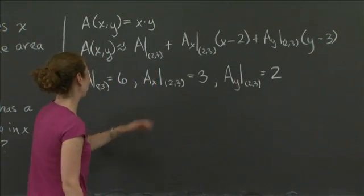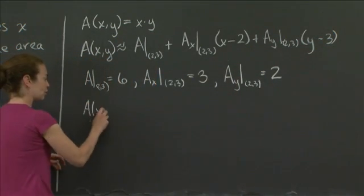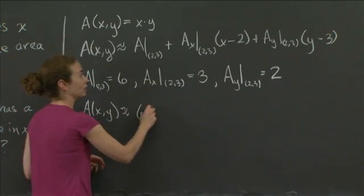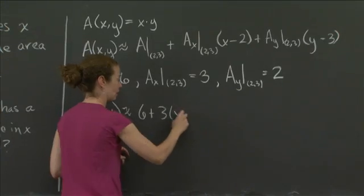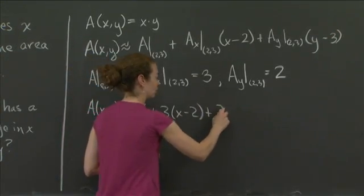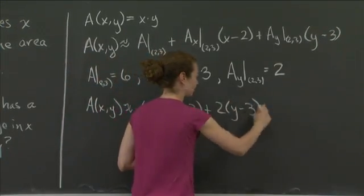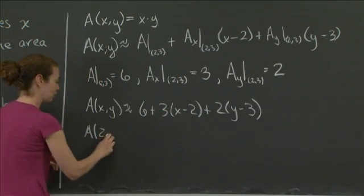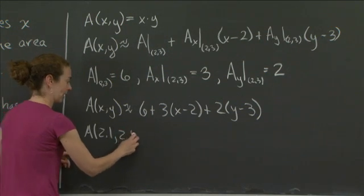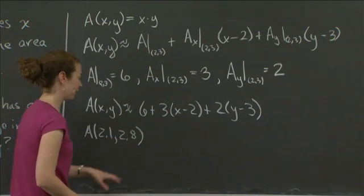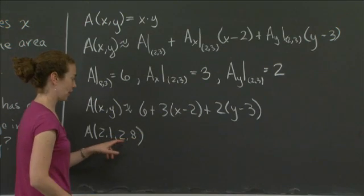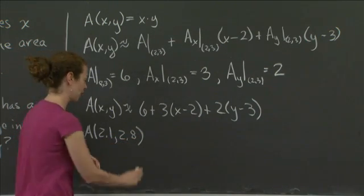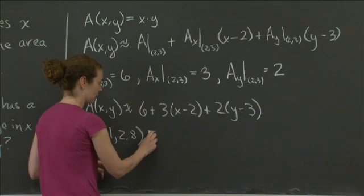OK. So now we just have to fill everything in. So my tangent plane approximation now says I get 6 plus 3 times x minus 2 plus 2 times y minus 3. And what I wanted was the area at 2.1 comma 2.8. So if I fill in those values for x and y, so 2.1 is x and 2.8 is y, if I fill those in,